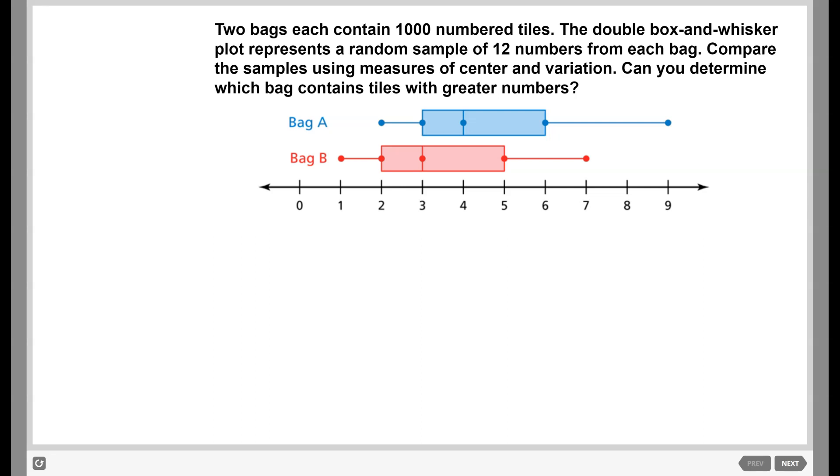In this video, we're going to be using random samples to compare populations. Looking at this first one, it says two bags each contain 1,000 numbered tiles. The double box and whisker plot represents a random sample of 12 numbers from each bag. Compare the samples using measures of center and variation. Can you determine which bag contains tiles with greater numbers?